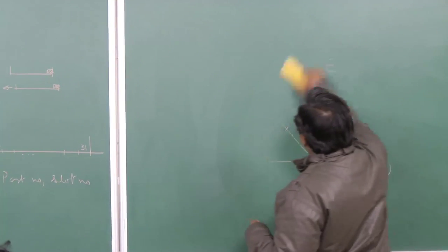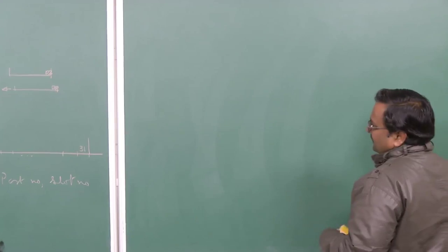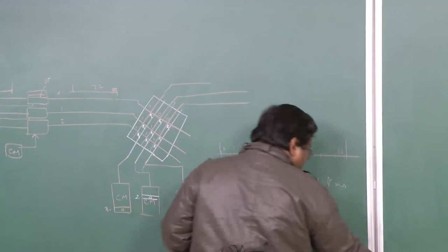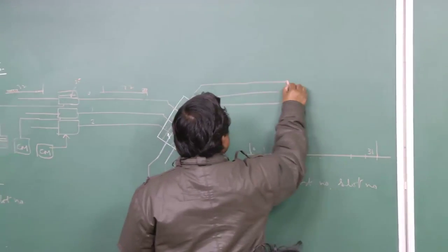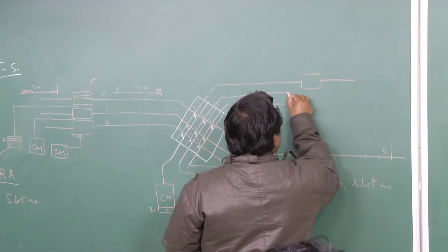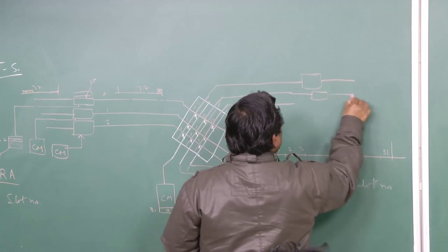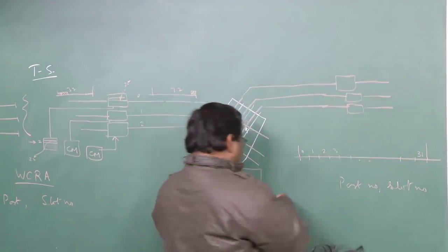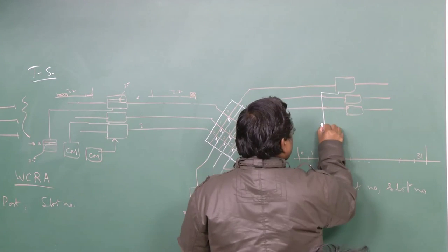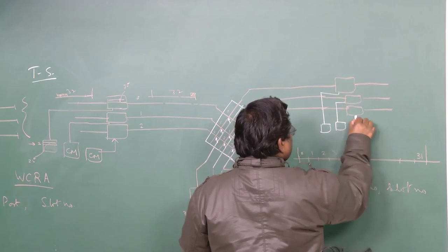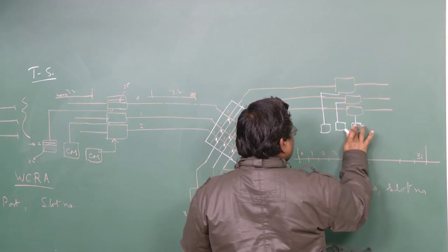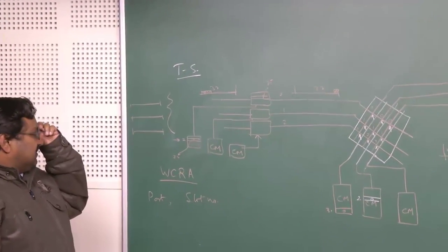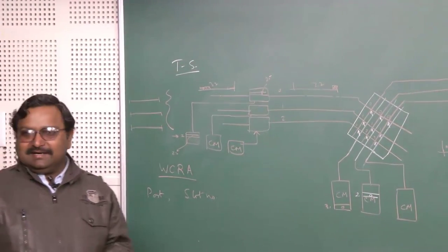We go for a three-stage configuration. Using the logic learned earlier, I put a time switch here, a space switch, and another time switch — with correspondingly the control memories. Once you have this TST structure, I will be able to take care of that contention.